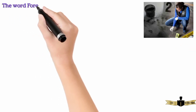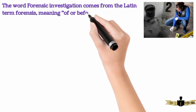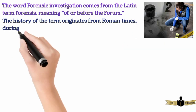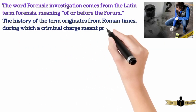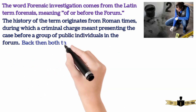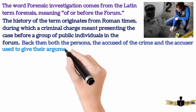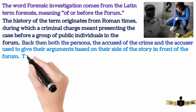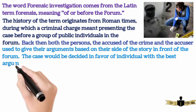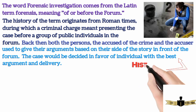The word Forensic Investigation comes from the Latin term forensis, meaning of or before the forum. The history of the term originates from Roman times, during which a criminal charge meant presenting the case before a group of public individuals in the forum. Both persons — the accused of the crime and the accuser — give their arguments based on their side of the story. The case would be decided in favor of the individual with the best argument and delivery. So this was all about the history of Forensic Investigation.